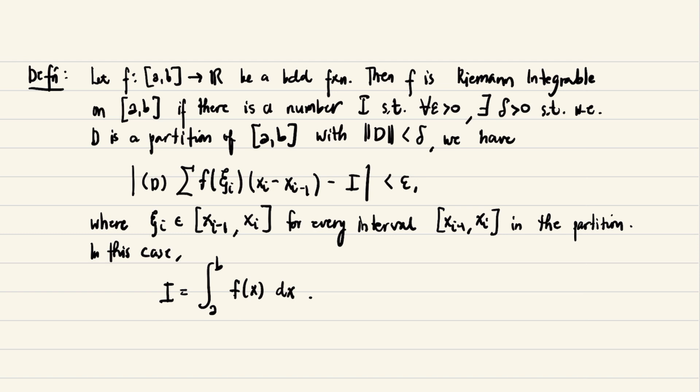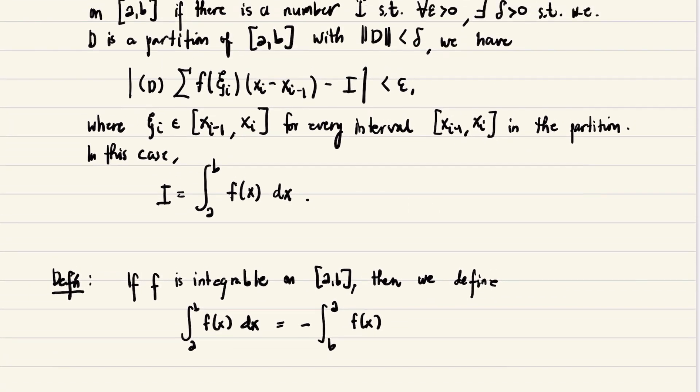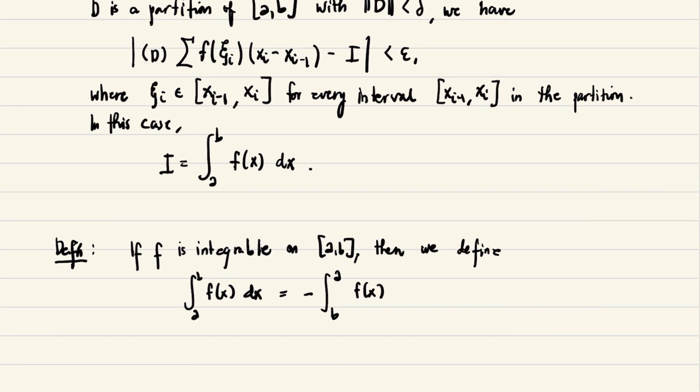And that Riemann sum goes from i to n because the partition is finite. Later on, we will be able to know what the integral of f(x) from a to b means. Second definition that we have to tackle is if f is integrable on the closed interval [a,b], then the integral of f(x)dx from a to b is actually the same as the integral of f(x)dx negative from b to a.